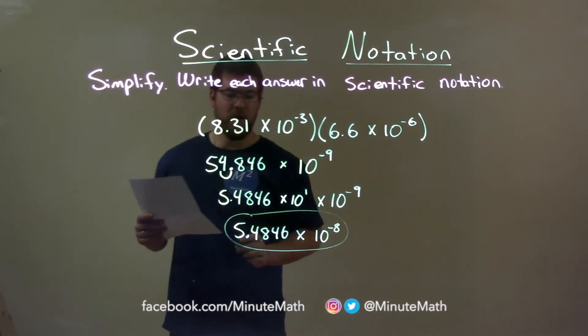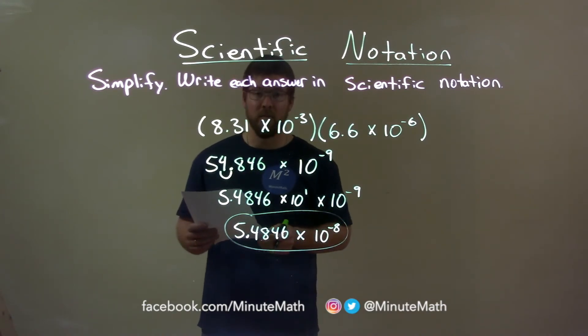And so our final answer is 5.484 times 10 to the negative eighth power.